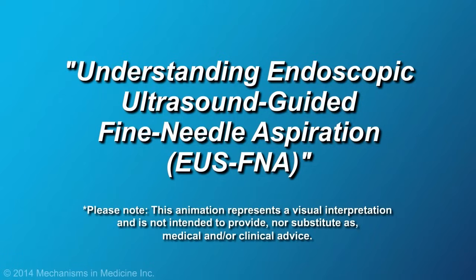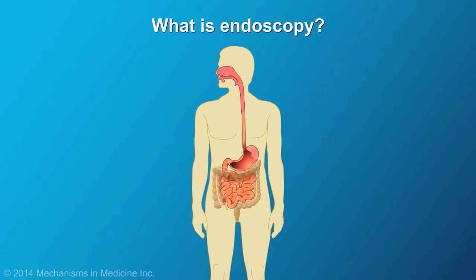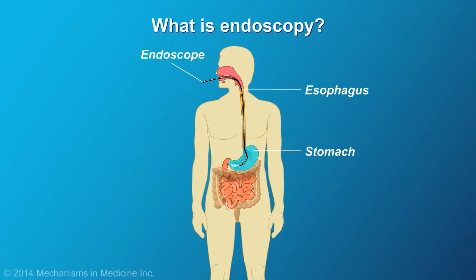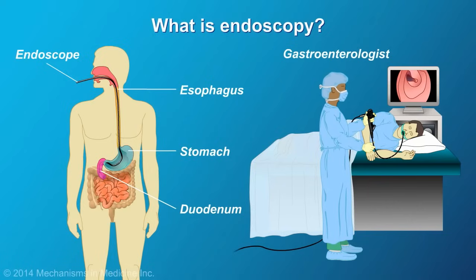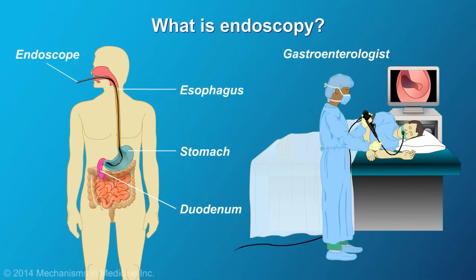Understanding Endoscopic Ultrasound Guided Fine Needle Aspiration, or EUS-FNA. Endoscopy is a medical procedure in which a flexible instrument that has a camera on the end, called an endoscope, is passed into an area of the body, such as the gastrointestinal or GI tract. Physicians specializing in diseases of the digestive system are known as gastroenterologists. Gastroenterologists use endoscopy to view a patient's GI tract and may employ a variety of endoscopic procedures.